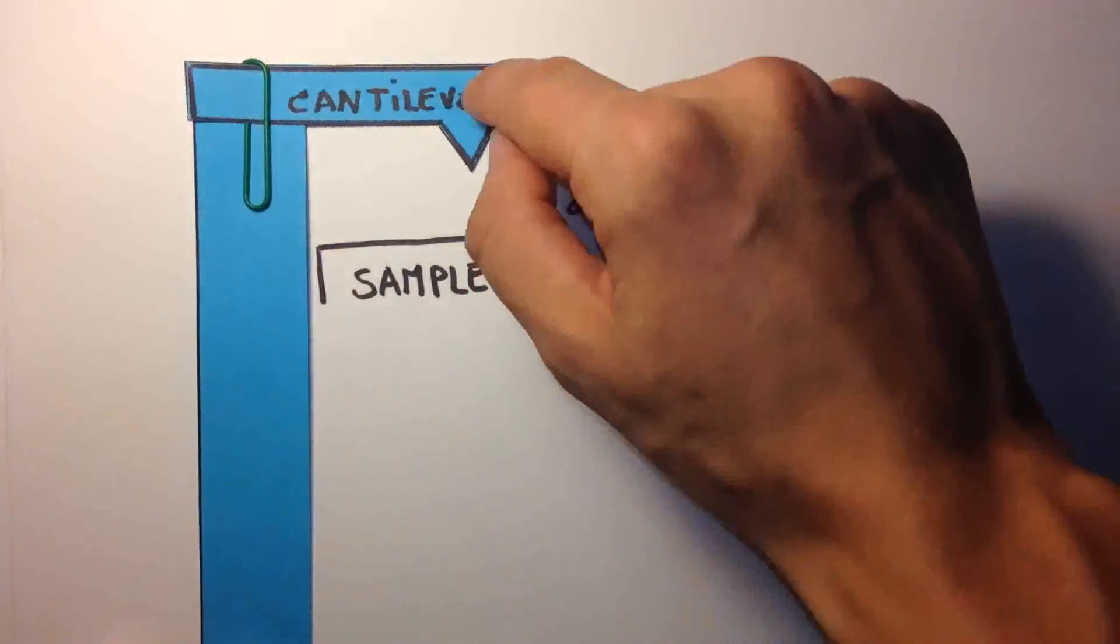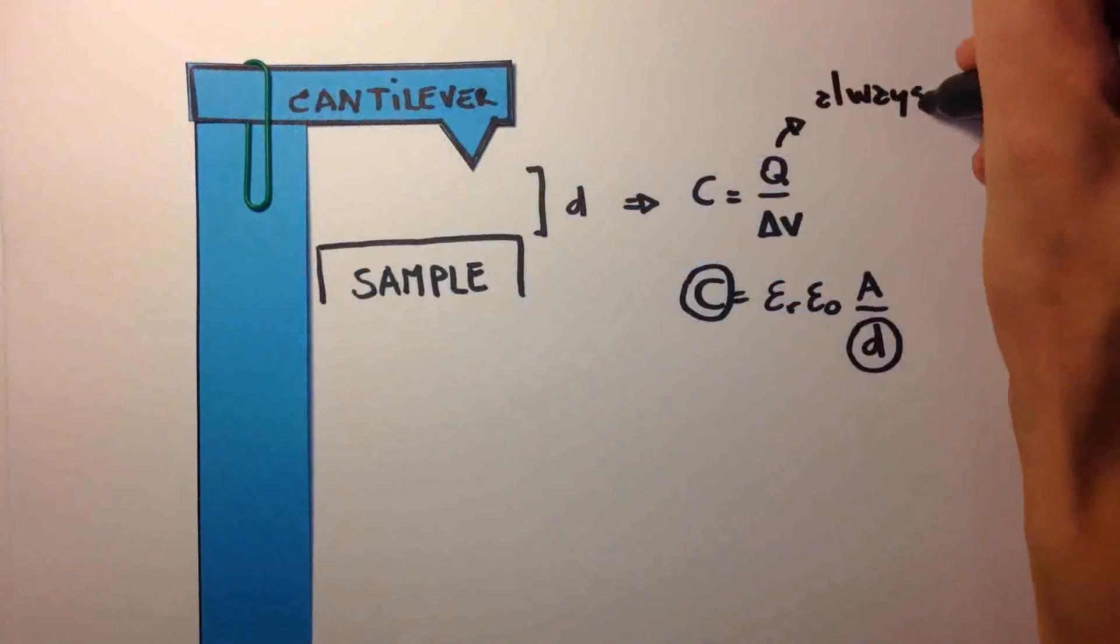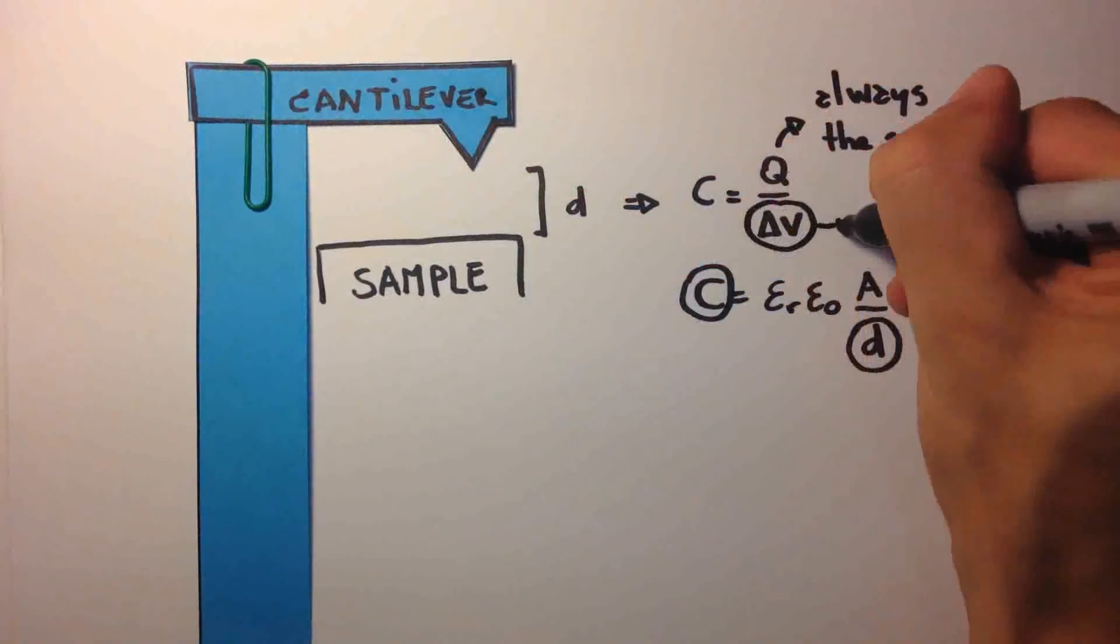The cantilever is vibrated, and as the amount of charges is always the same, the measured potential difference changes.